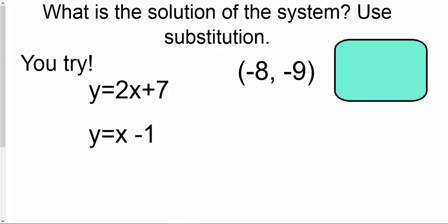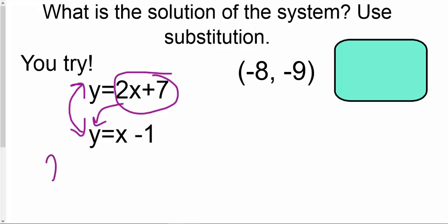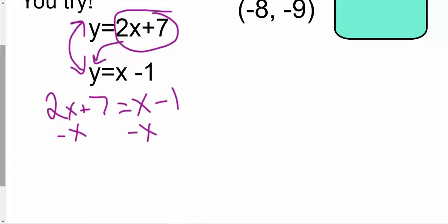The first thing we're going to do here is because they're both y equals — which we normally could graph, and we can still do that — we are going to set these two equations equal to each other. We're going to replace the y in the second equation with the y in the first, which means that 2x plus 7 is going to replace this y. So now we have 2x plus 7 equals x minus 1, and now this is an equation with variables on both sides. So we can subtract both sides by x.